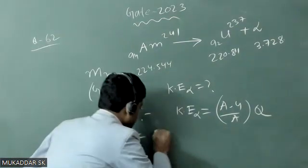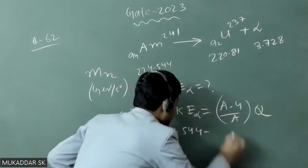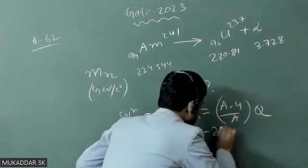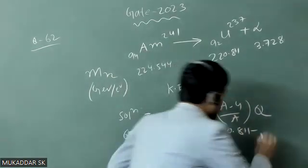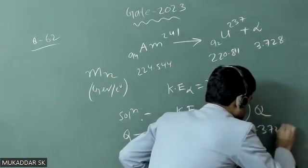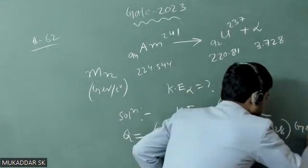Mass of reactant is given 224.544 minus 220.81 minus 3.728 in the unit of Giga electron volt per c square.